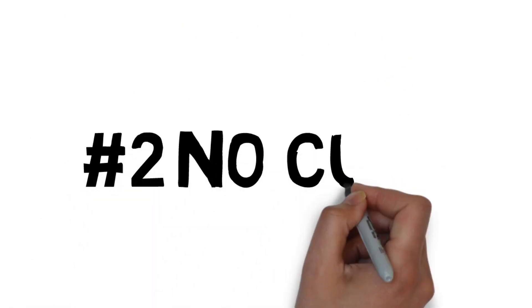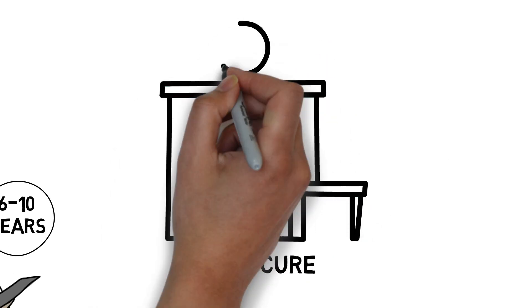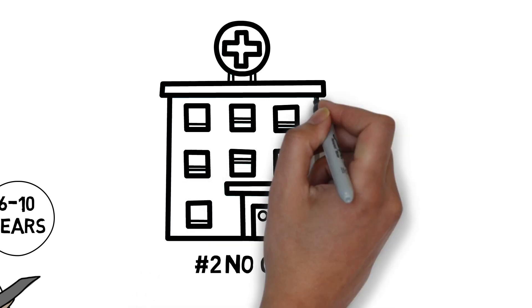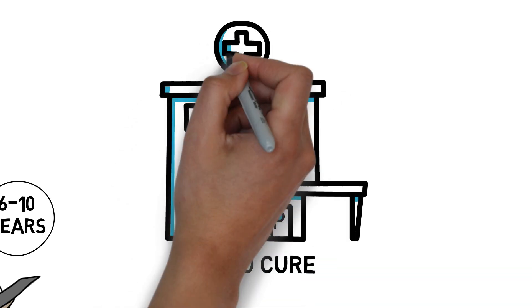Number 2. There is no cure for celiac disease. And unlike most other health conditions, there's no medical treatment either. The only existing natural treatment is a 100% gluten-free diet.